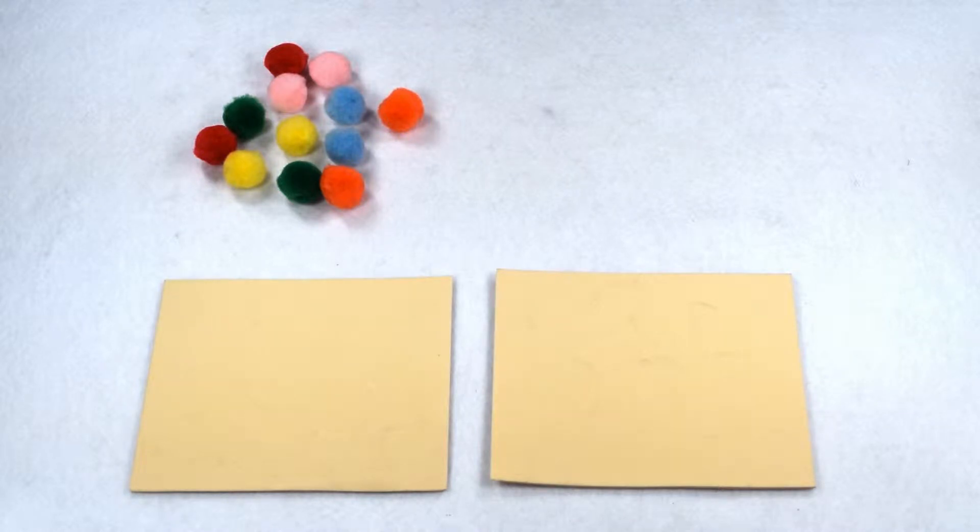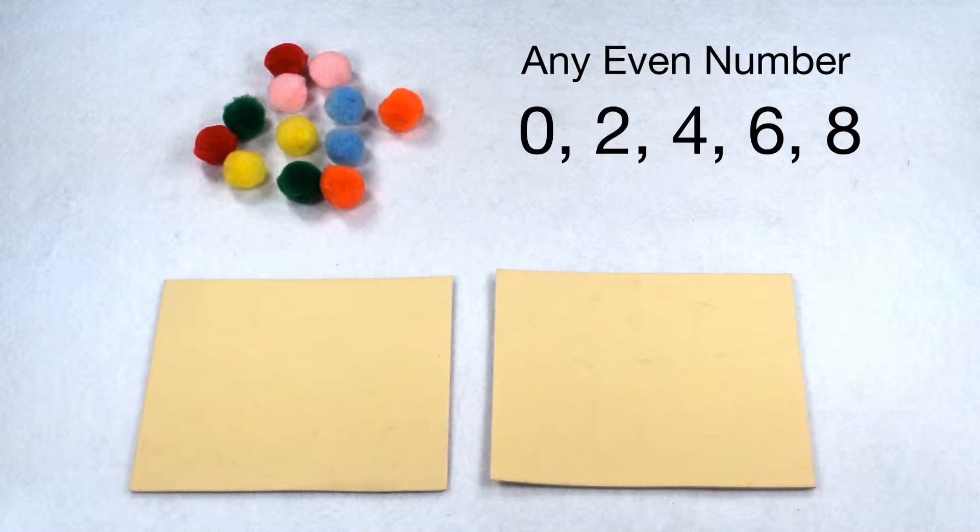How can we determine which numbers can be divided by 2 without any remainders? Any number that is an even number can be divided by 2. Even numbers end in 0, 2, 4, 6, or 8.